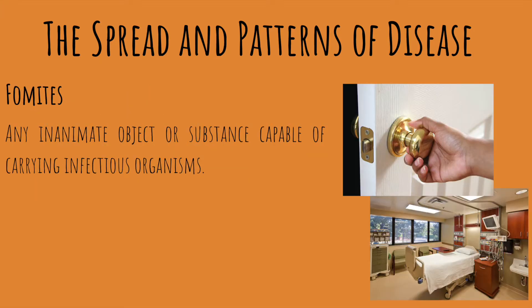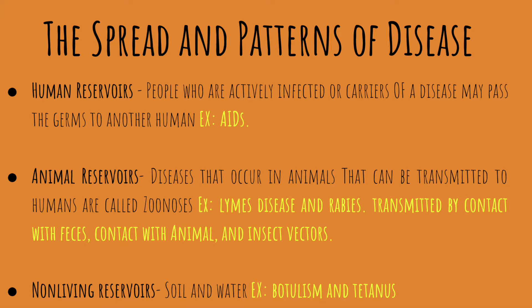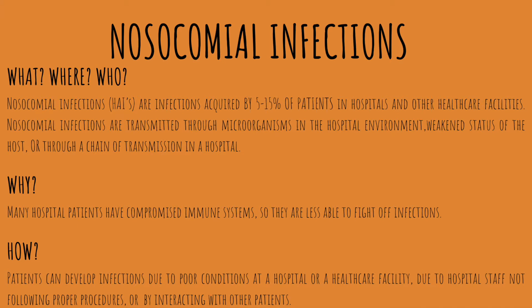A fomite is any non-living object carrying an infectious organism or capable of carrying one — examples include doorknobs or hospital beds. A reservoir of infection can be a person, animal, soil, or plant — any place where an infectious agent can grow and multiply. Carriers typically carry the disease without being harmed, passing it unknowingly. There are three reservoir types: human reservoirs, animal reservoirs (diseases transmitted from animals to humans, called zoonosis), and non-living reservoirs such as water or soil.